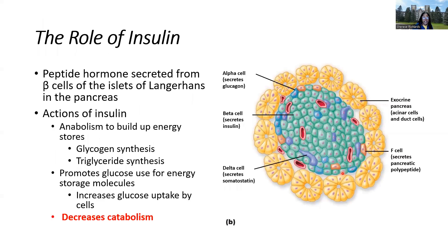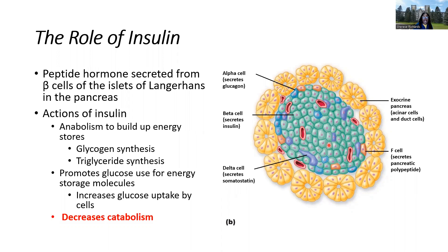Insulin is secreted by the islets of Langerhans cells — clusters of cells found in the pancreas. The pancreas has two types of tissue: the exocrine portion, which secretes enzymes that help break down food in the GI tract, and the endocrine islets. Exocrine secretions are released into ducts, while endocrine glands release hormones into the blood. The islets have an abundance of blood vessels, which is how insulin enters the bloodstream. Insulin is an anabolic hormone that helps build up energy stores.